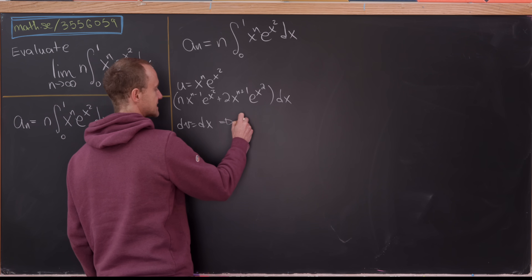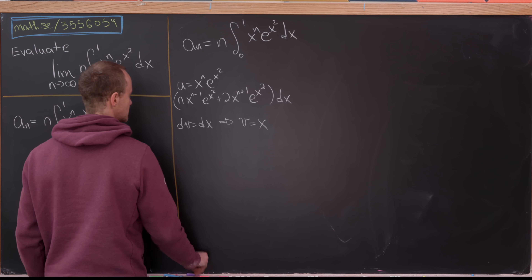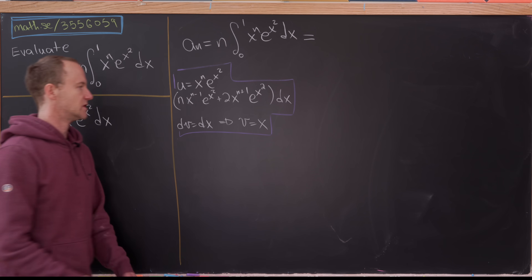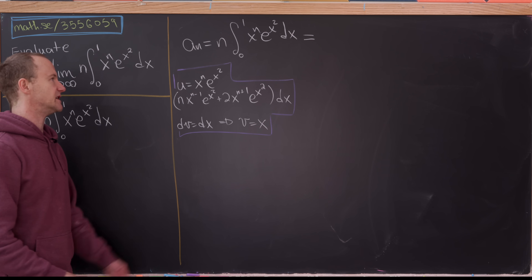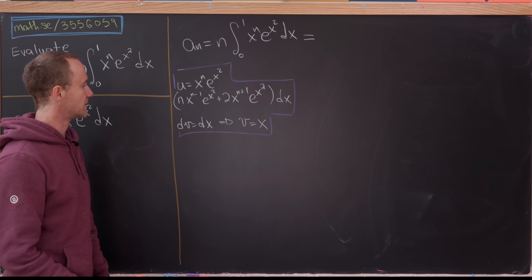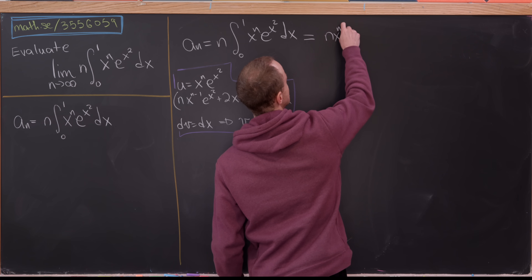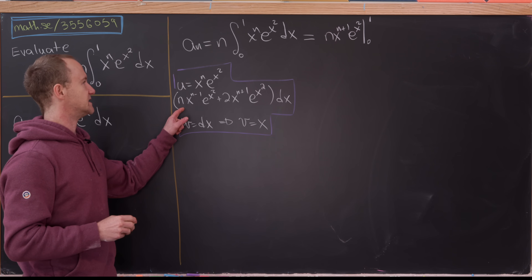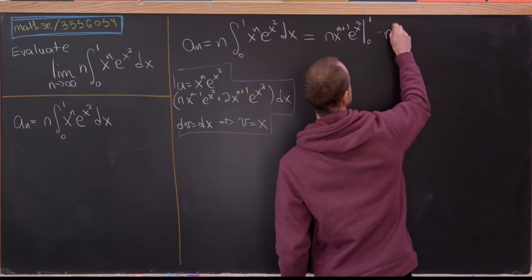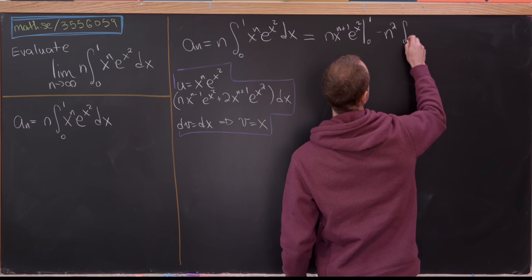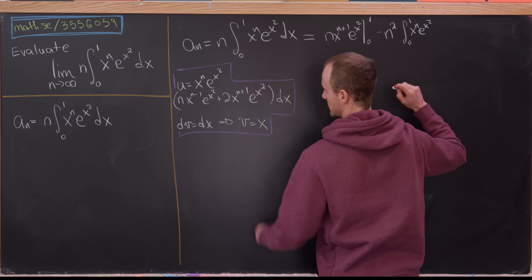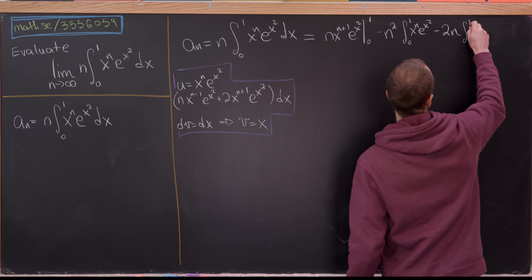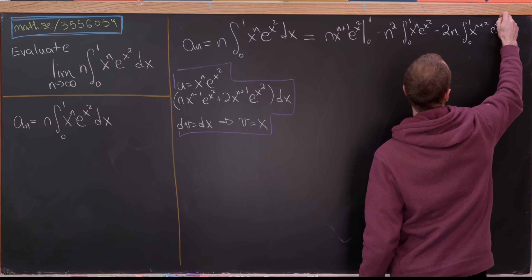Since dv is dx, v is simply equal to x. Using the standard integration by parts formula, this equals u times v evaluated at the endpoints minus the integral of v du, keeping in mind we need to include the n out front. That leaves us with n times x to the n plus 1 times e to the x squared evaluated from 0 to 1, minus n squared times the integral from 0 to 1 of x to the n times e to the x squared, minus 2n times the integral from 0 to 1 of x to the n plus 2 times e to the x squared dn.